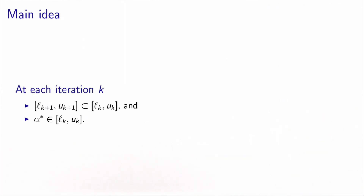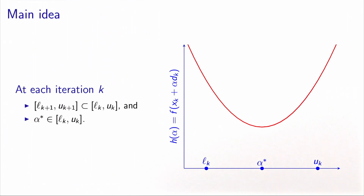The main idea is to define a sequence of intervals which are nested into each other, so the interval at iteration k+1 is strictly contained in the interval at iteration k. These intervals must be defined such that alpha star, the optimal solution, belongs to each of them. Here is a plot where the x-axis represents alpha, and the y-axis represents the value of h that we want to minimize. The intervals are defined by a lower bound Lk and an upper bound Uk, such that alpha star belongs to this interval.